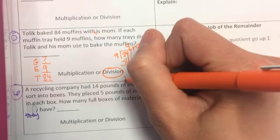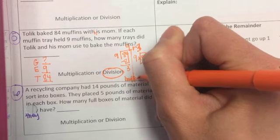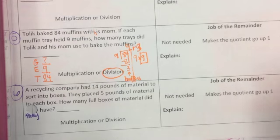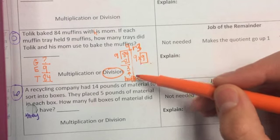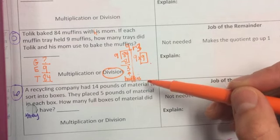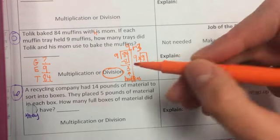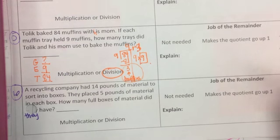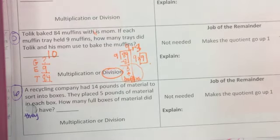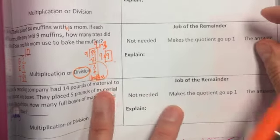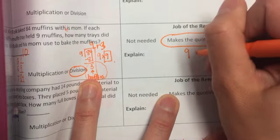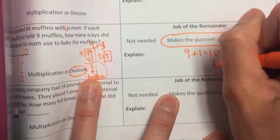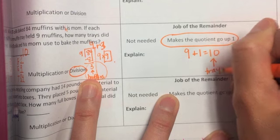9 trays, and 3 represents how many muffins I had left over. Well, if I think logically here, I'm going to make 9 full trays with 9 in each tray. But I have a little bit of leftover muffin mix, and I have 3 more muffins that I did bake. So in actuality, I would actually have to use another tray for these 3 muffins. So my answer here, how many trays did they use, is 10. So the job of my remainder is that it makes the quotient go up by 1. I had 9, but 9 didn't cover everything. So I had to say 9 plus 1 equals 10. So I actually had 10 trays of muffins.